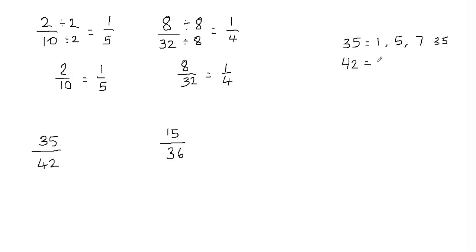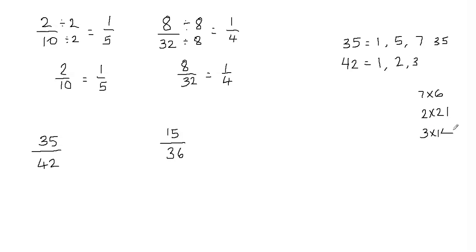Now let's write down the factors of 42. Starting from 1 — since 42 is an even number, it's divisible by 2. 42 is also divisible by 3. We know that 7 times 6 is 42. Since 42 is divisible by 2, if we divide 42 by 2 we get 21, so 2 times 21 gives us 42. If we divide 42 by 3, we get 14, so 3 times 14 is also 42. And 1 times 42 is 42.